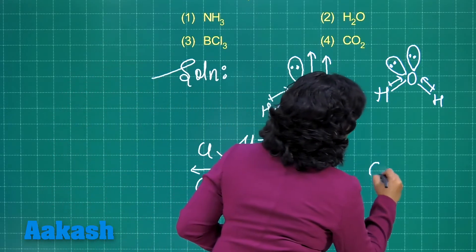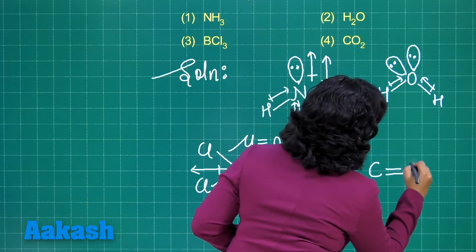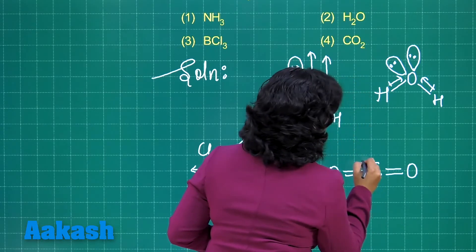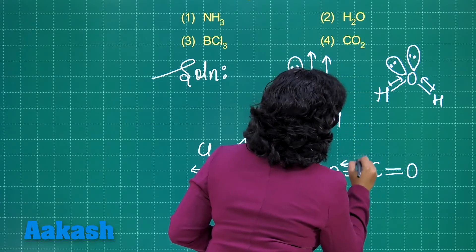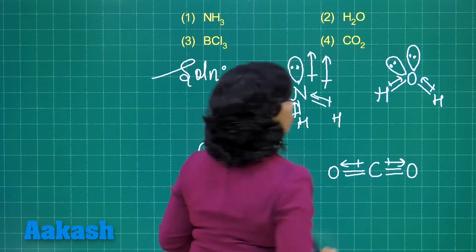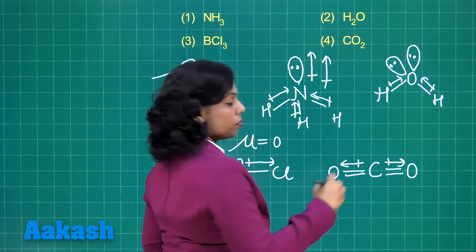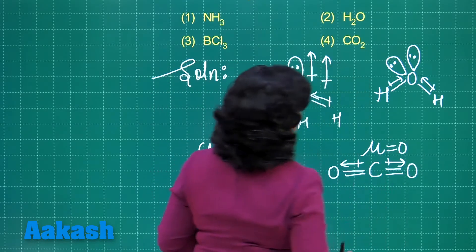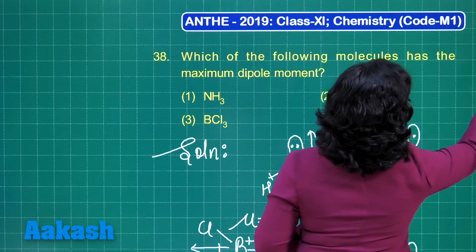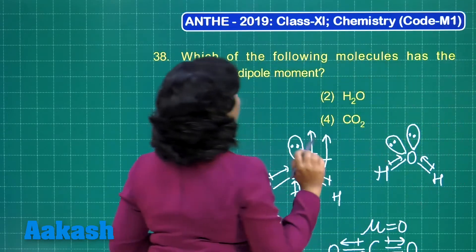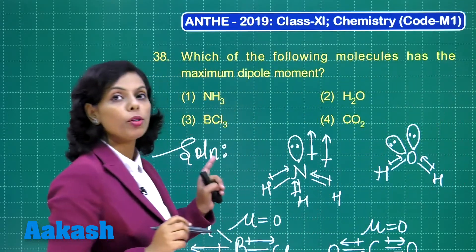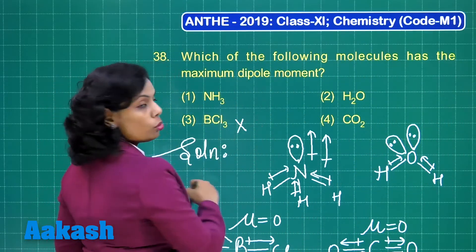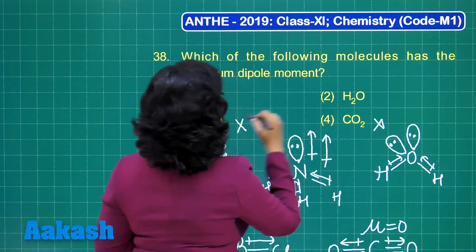If I talk about carbon dioxide, it is a linear molecule and here also there is no polarity — dipole moment is 0. So we have the first two cases, ammonia and water, in which dipole moment exists, while BCl₃ and CO₂ both have 0 dipole moment.